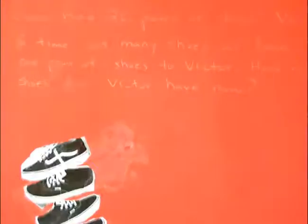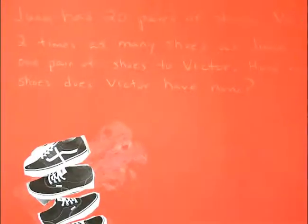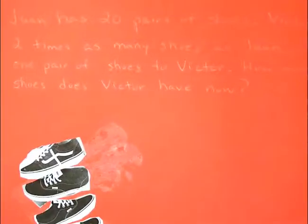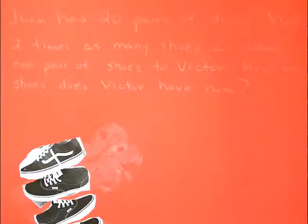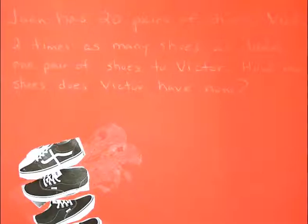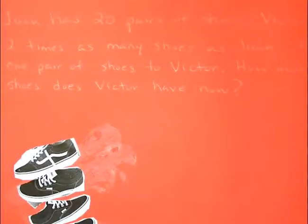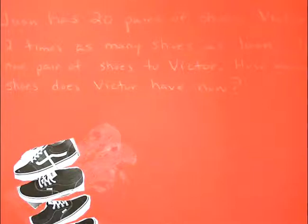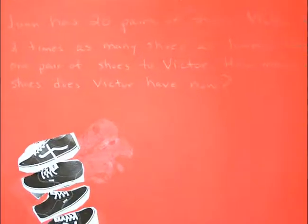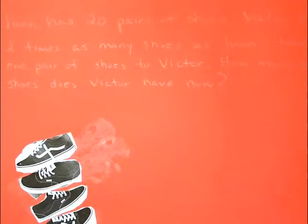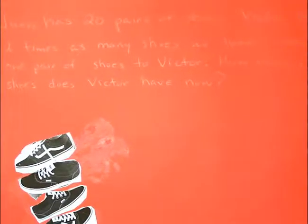Okay, this one's a little hard to read because it's in pencil, but it says: Juan has 20 pairs of shoes. Victor has two times as many shoes as Juan. Juan gives one pair of shoes to Victor. How many pairs of shoes does Victor have now?